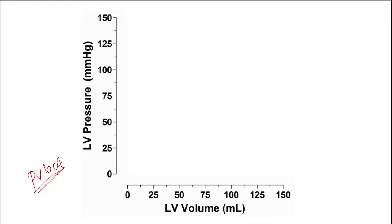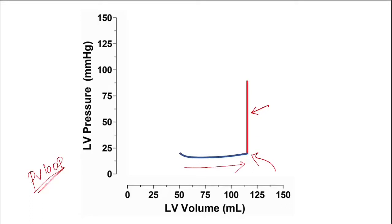In a pressure-volume loop, the isovolumetric phases appear as vertical lines. During diastole there is an increase in volume without much change in pressure. When the mitral valve closes and systole begins, the pressure increases steeply without any change in volume — the volume is on the x-axis, so there is no movement along the x-axis. The volume remains the same and the pressure rises steeply. This is called the isovolumetric contraction phase.